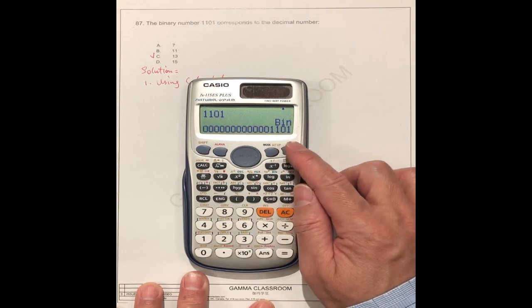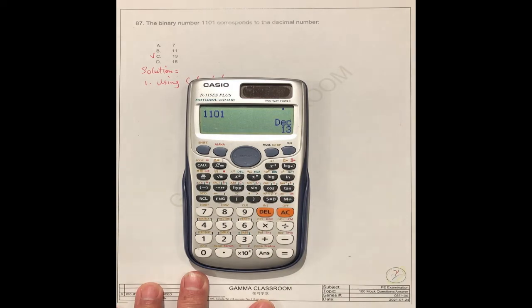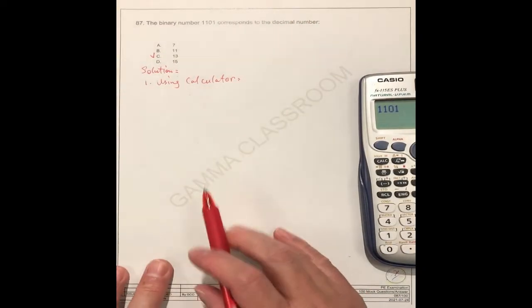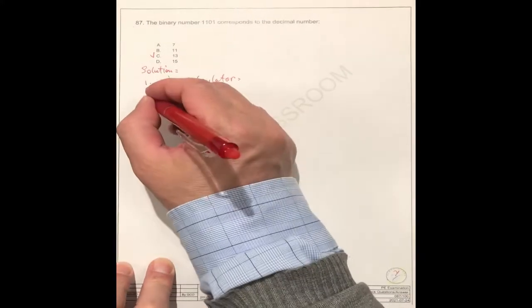Binary is 1, 1, 0, 1. So decimal is 13. So you get the answer, 13C.